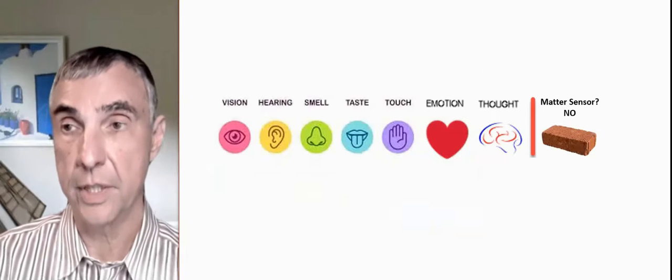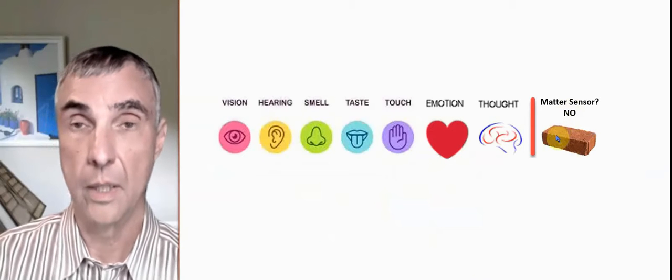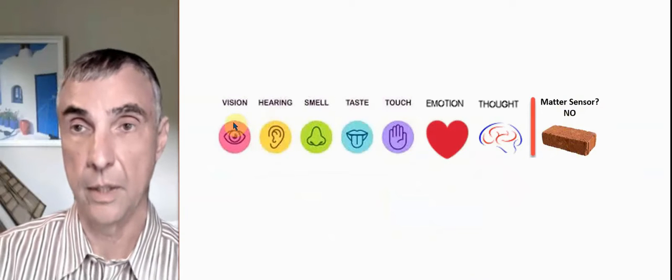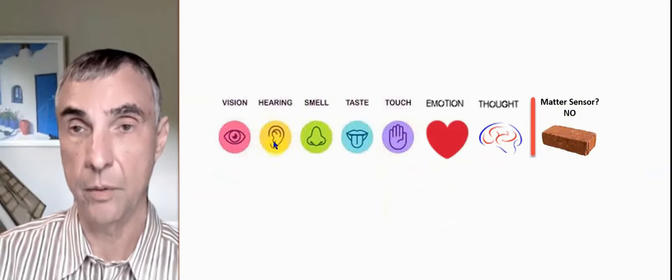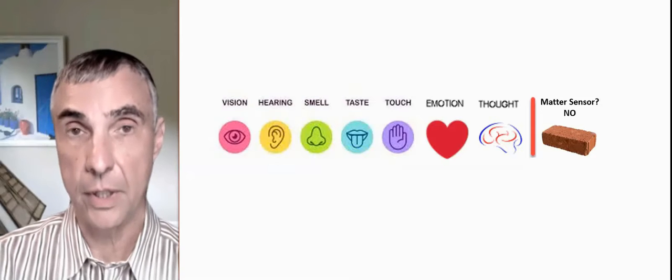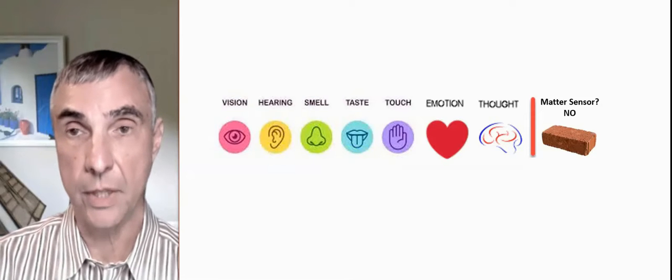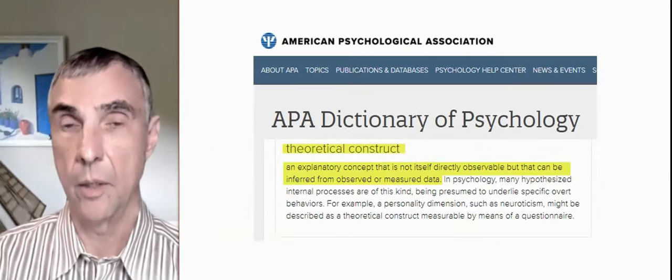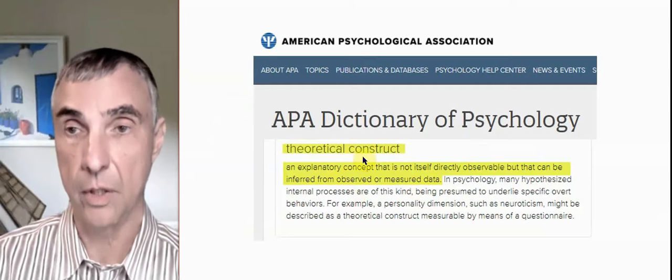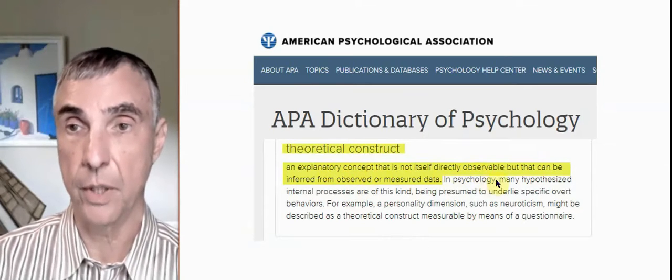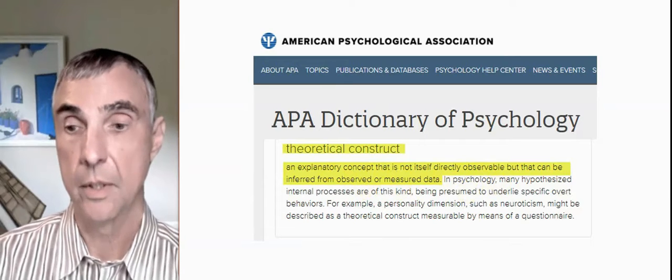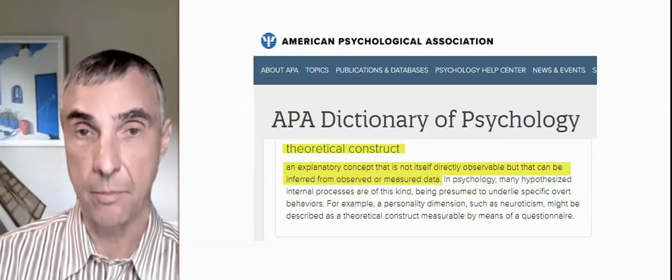But what we do not have is a sense that senses matter. We cannot sense matter directly. Now, the idea there is that when we see a brick, we see it. And then we can go and touch it. And if we drop it, we can hear it hit the ground. I don't know if I'd want to smell or taste the brick. But the idea is that the brick is something that we create in our mind to make sense of our sensory input. A phrase for something that we create in our mind to make sense of things that we do experience is called a theoretical construct, an explanatory concept that is not directly observed but can be inferred from observed or measured data. So in this case, the observed data is the sight, the touch, and the sound. And we hypothesize that the brick is there.